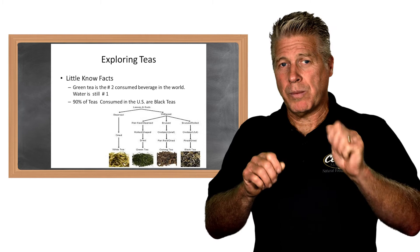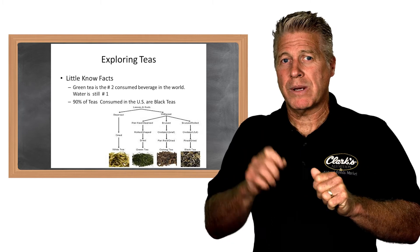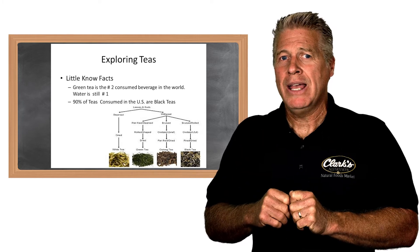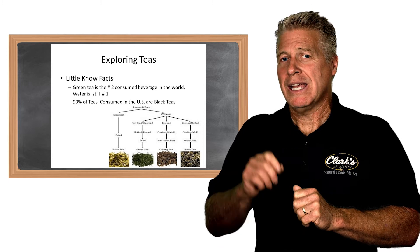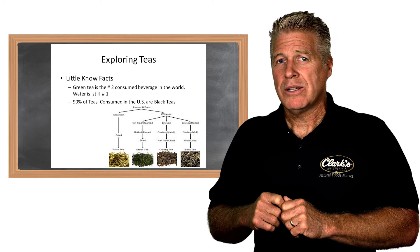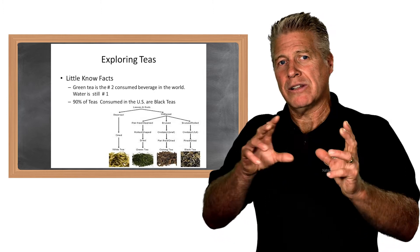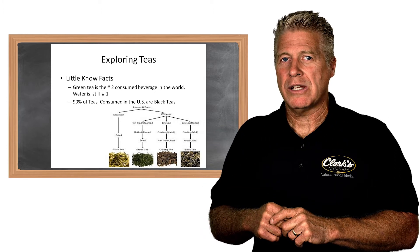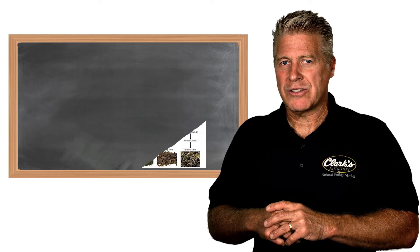Same exact tea leaf picked early in the winter months giving us the white tea, and then the green tea being picked in the springtime, and then the oolong being picked in the summer. And finally, the black in the summer to early fall. As the leaf changes, so does the caffeine content. We'll have a look at that in the next session as well.